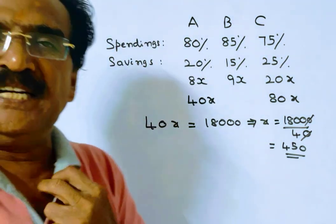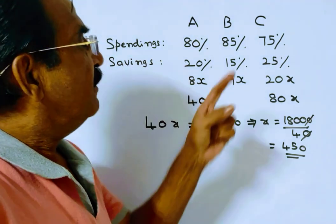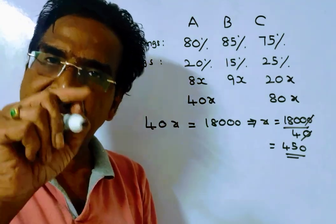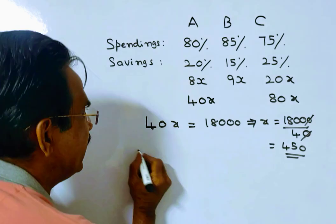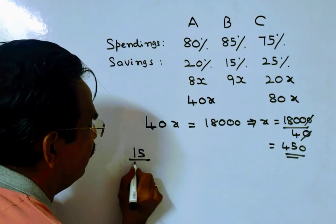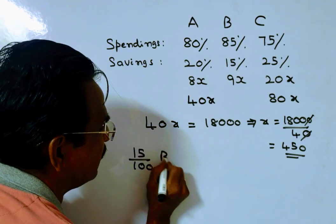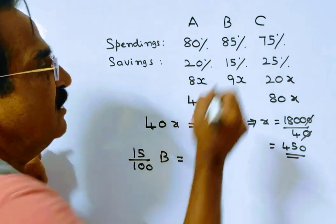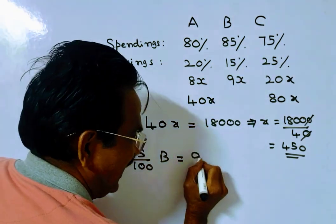Friends, now we have to find the income of B. 15% of B's income is his savings. What is his savings? 9x. X is equal to 450.